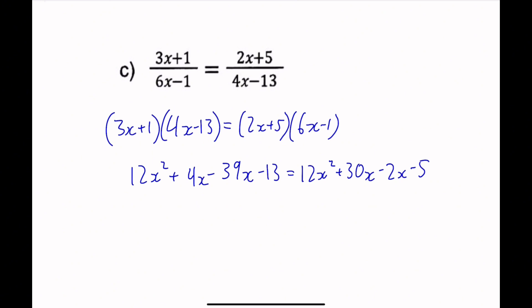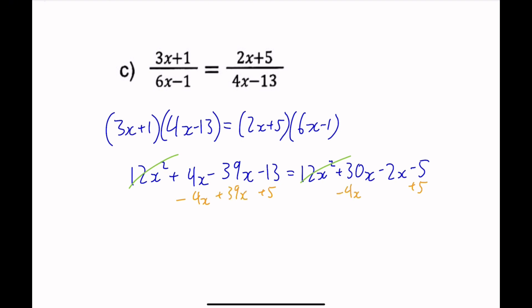We can cancel the 12x squared terms on both sides. Then isolate the x's: add 5 to both sides and add minus 4x plus 39x to both sides. That gives us minus 13 plus 5, which is negative 8, equals 30x plus 39x minus 2x — wait, minus 4x plus 39x — that's 63x. So x equals negative 8 over 63. And there's our answer.